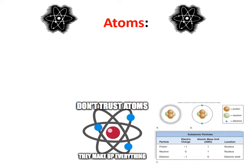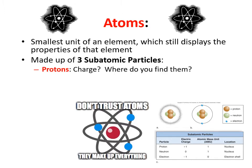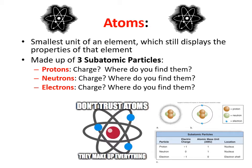Atoms are the smallest unit of an element which still displays the properties of that element. You have three subatomic particles making up an atom: there are protons, neutrons, and electrons. It's very important to be able to distinguish them.